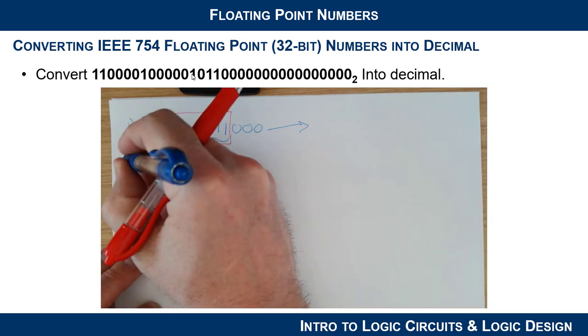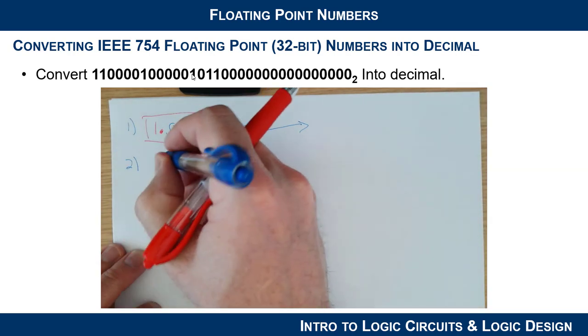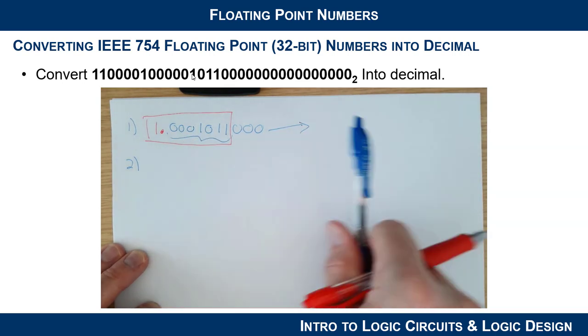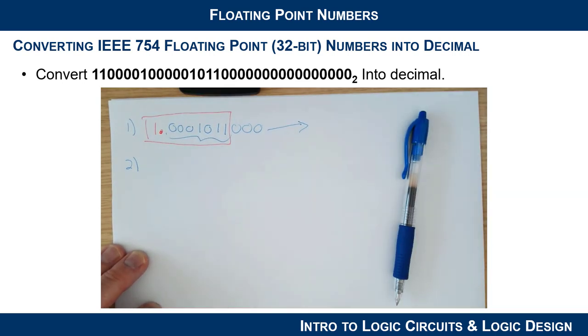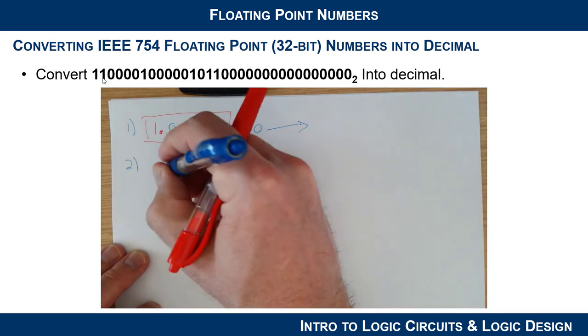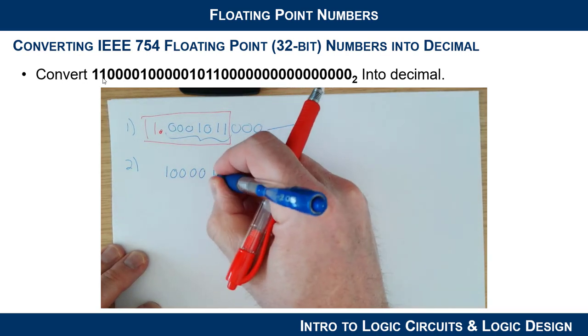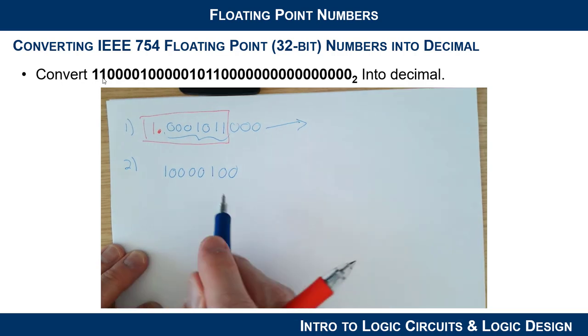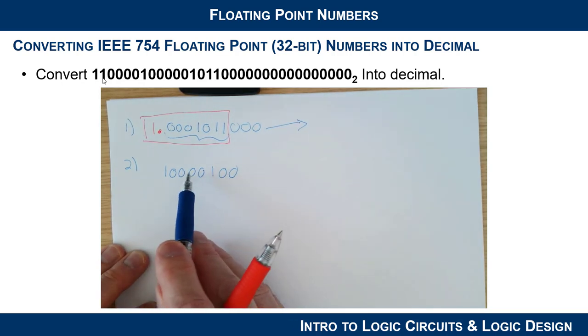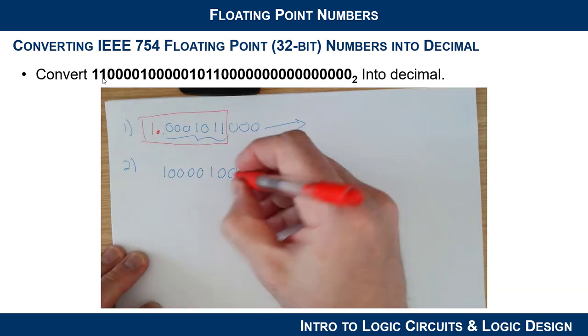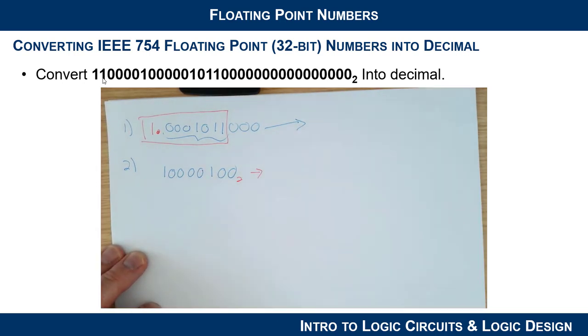So the next step is going to be to determine the original exponent. What I want to do is I want to extract the exponent bits from this field, and I just need to remember that the first bit is a sign, and then I have eight exponent bits. So I'm going to have 1, 0, 0, 0, 0, 1, 0, 0. So I got eight bits here. So these are my exponent bits, but remember that they're biased.